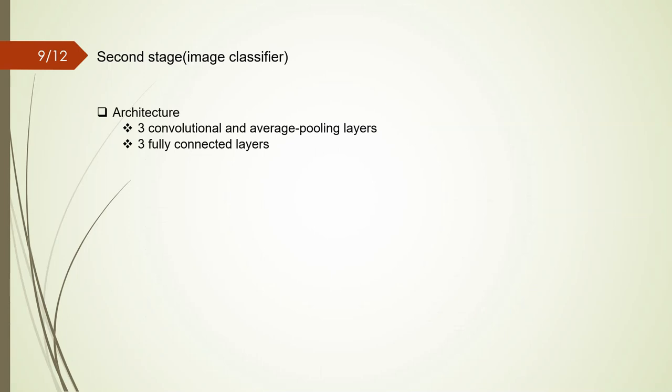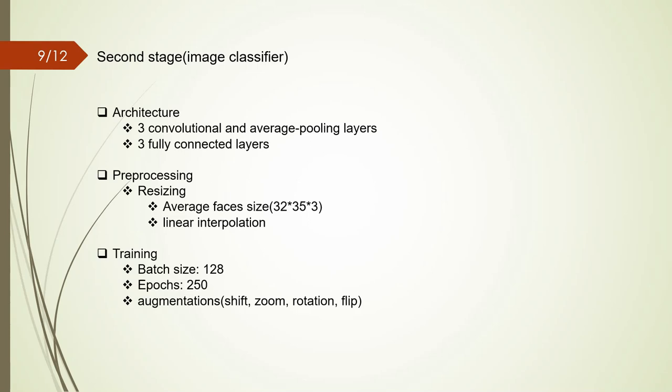These networks consist of three convolutional and average pooling layers followed by three fully connected layers. Due to the variety of sizes, the input images are resized to the average size of the face bounding boxes before feeding to the network. The mentioned network was trained with a batch size of 128 for 250 epochs. And also due to the limited dataset, data augmentations such as rotation, shift, zoom and horizontal flip have been used.